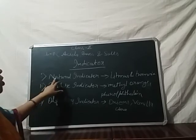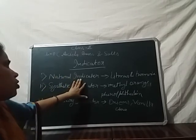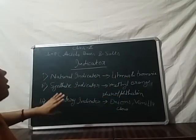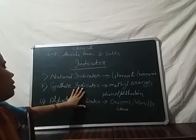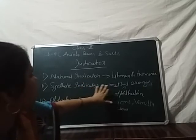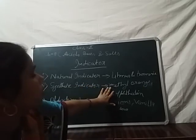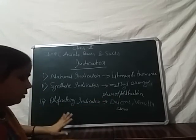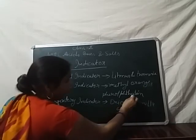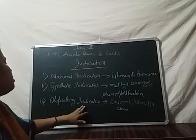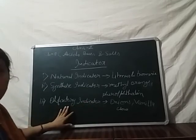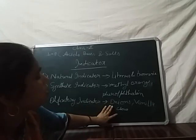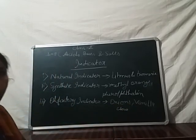To summarize again: natural indicators are extracted from natural sources like litmus and turmeric. Synthetic indicators are man-made and prepared in a lab — examples are methyl orange and phenolphthalein. Olfactory indicators detect acid and basic properties by the changing of odour of the solution — examples are onion, vanilla, and clove. Thank you and have a nice day.